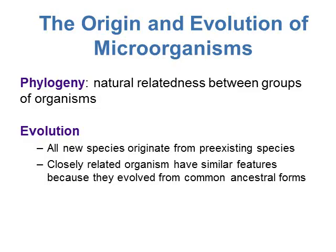Besides taxonomy — organizing, classifying, and naming microorganisms — we also want to make sure that species within a group are evolutionarily related to each other. This goes along with what we call phylogeny, which is just the natural relatedness between groups of organisms, and it's based on evolution. The theory of evolution, which has lots of evidence and experiments to support it, states that all new species originate from pre-existing species. Organisms change over time and adapt to their environment. Closely related organisms are more similar to each other because they evolved from a common ancestral form.